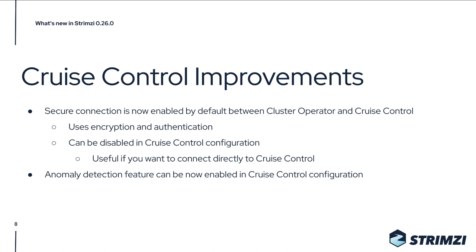There are also some Cruise Control improvements. The connection between the cluster operator and Cruise Control is now secured with encryption and authentication. Some users connect to Cruise Control directly rather than through the operator, so there's a possibility to disable this security in the Cruise Control configuration — but keep in mind it will be secured by default. We also made it possible to configure and enable the anomaly detection feature, which can be done in the Kafka custom resource under the Cruise Control configuration section.